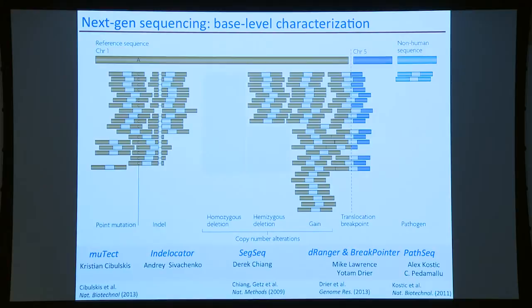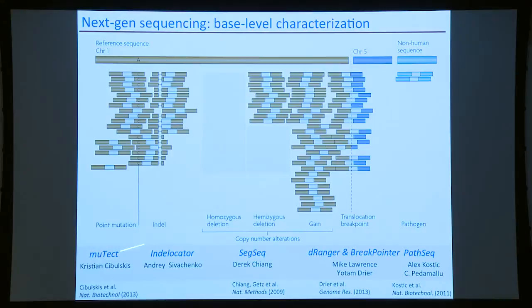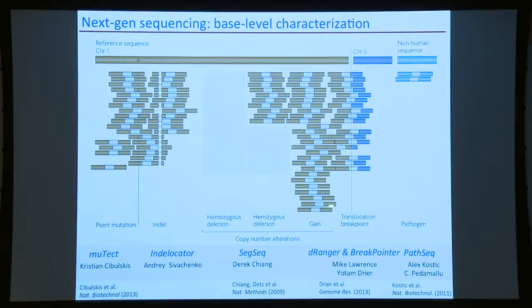What can we see in cancer? We sequence DNA fragments, align both ends to the genome. We can find point mutations different in the cancer versus germline, indels, copy number changes by read depth, translocations by seeing one end of a read on chromosome one and the other on chromosome five, and non-human sequences from pathogens or viruses that could cause cancer. We developed multiple tools: MuTect for point mutations, InDellocator for indels, SegSeg and CapSeg for copy number, DRanger and BreakPointer for rearrangements, and PathSeek to find pathogens.